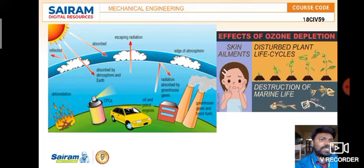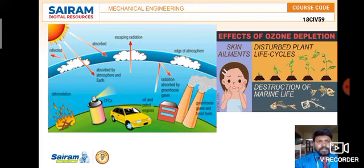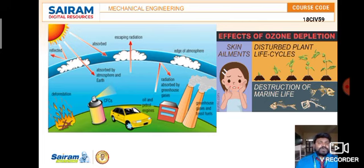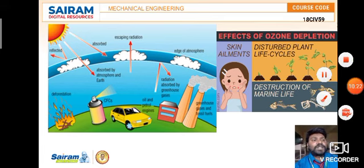Effects of ozone depletion include skin ailments, disturbed plant life cycles, and destruction of marine life. In summary, this video covered acid rain and ozone depletion. We should take the initiative to switch to renewable energy sources rather than non-renewable ones, as renewables won't disturb the atmospheric climate or cause ozone layer thinning. We should also plant trees and avoid deforestation — these actions can bring meaningful change. Thank you for watching.